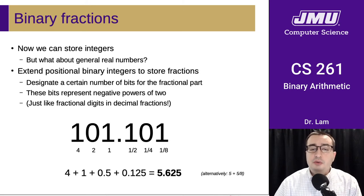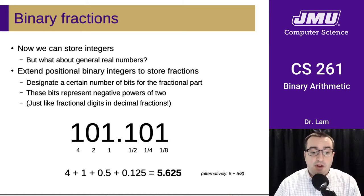So the relatively straightforward way of doing this is to extend the positional binary integers to binary fractions. We'll designate a certain number of bits in the number for the fractional part, and then the remainder will be the integer. And so the bits will represent negative powers of 2, just like the regular digits represented positive powers of 2.